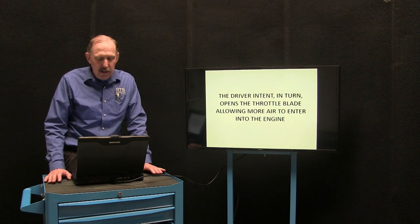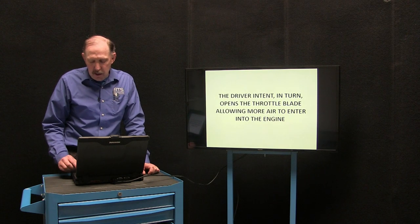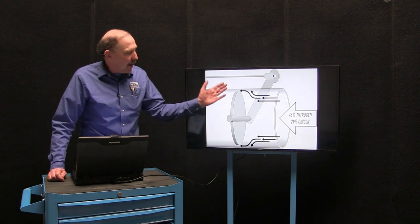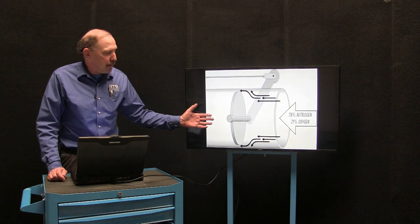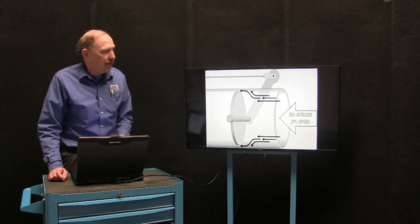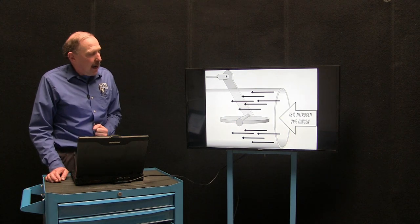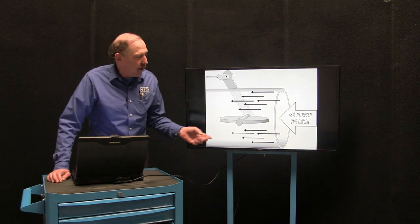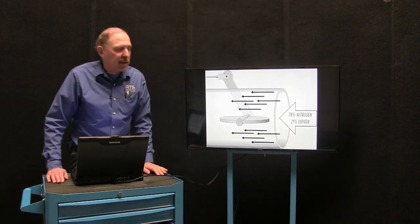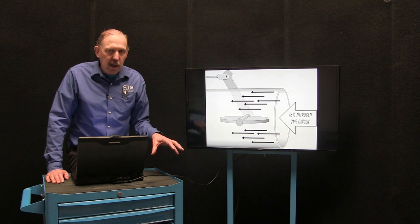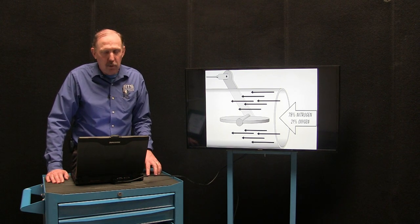The driver intent in turn opens a throttle plate allowing more air to go into the engine. At idle, I have a restriction from the throttle plate. When this is closed, I have a negative pressure on one side and atmosphere on the other. When I open this throttle up, now I allow the atmosphere to rush in. The atmosphere is roughly 78-79% nitrogen and about 21% oxygen. The nitrogen is the working fluid for the engine and the oxygen is the oxidant to react with my fuel stock.